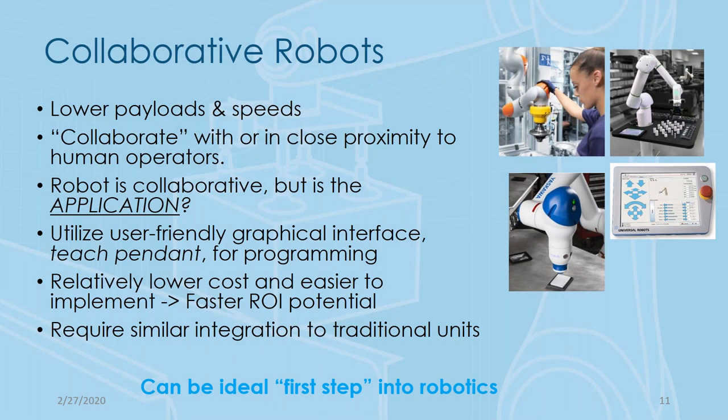Beyond the robot types themselves, an additional layer is the idea of collaborative robots — what we refer to as cobots. As the name implies, they're able to collaborate with or in close proximity to human operators. They do this through software and sensing capabilities that identify when an obstruction has been hit — by feeling the force or noting that their movement has been impeded from where they expect it to be. Collaborative robots have become more prevalent over the past five years or so.